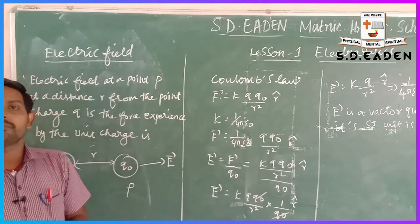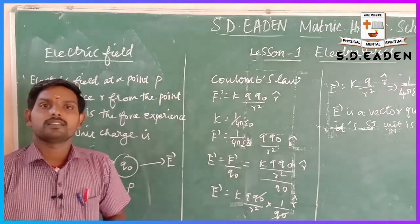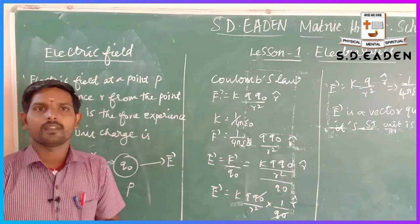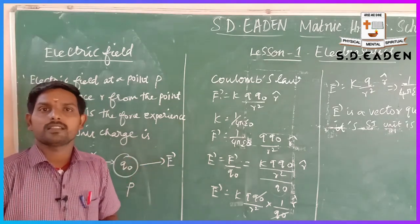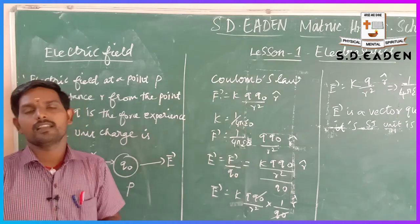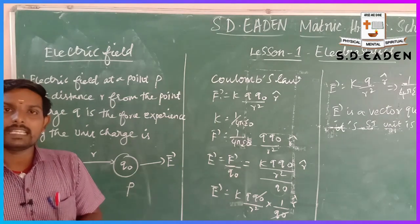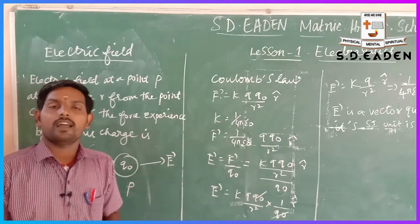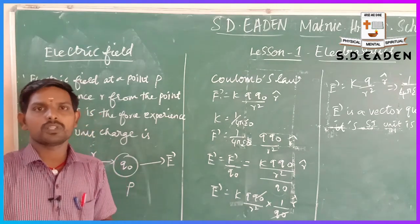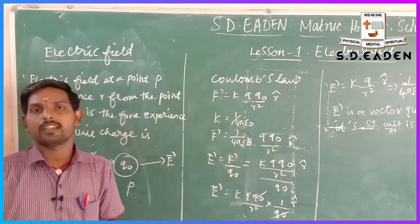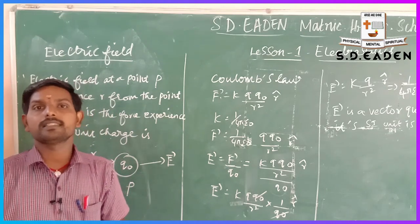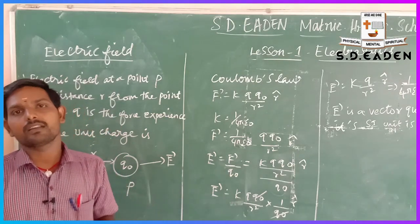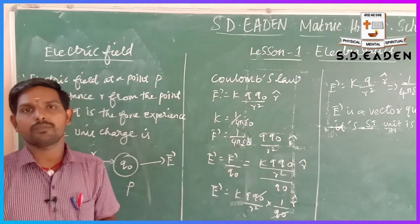What is meant by electric field? Coulomb's law explains the interaction between two point charges, but how does that interaction occur? Consider one charge q placed in space, then another test charge q0 brought near it — it experiences an attractive or repulsive force. This concept is explained as action at a distance, where the second charge q2 exists at a distance away from the first.